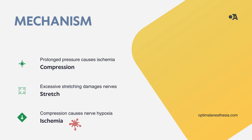Lastly, let's discuss ischemia. Ischemia happens when nerves don't get enough blood flow. It's often caused by compression but can also result from other factors. When a nerve is deprived of oxygen, it can suffer serious damage. Nerves are incredibly sensitive to changes in their blood supply, and even short periods of ischemia can lead to significant issues.